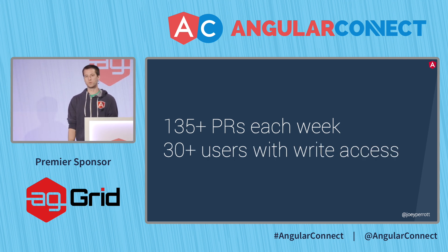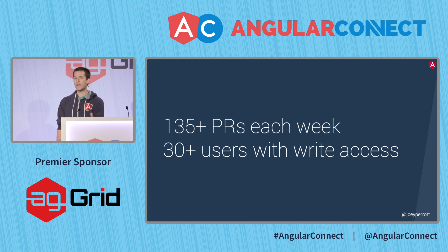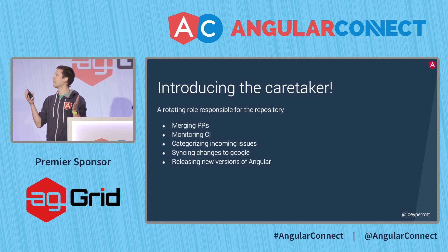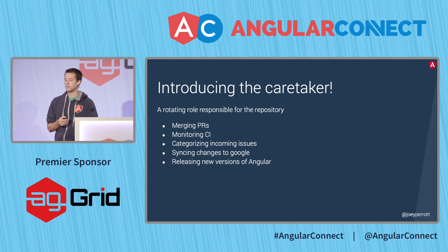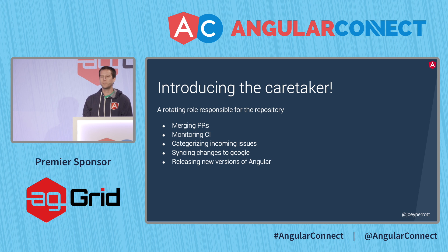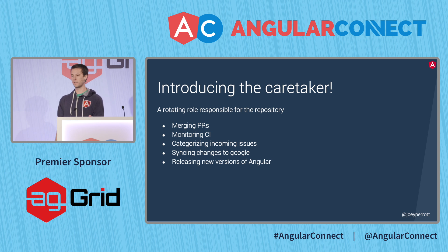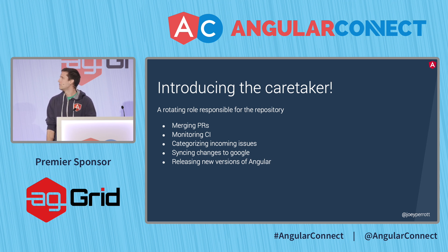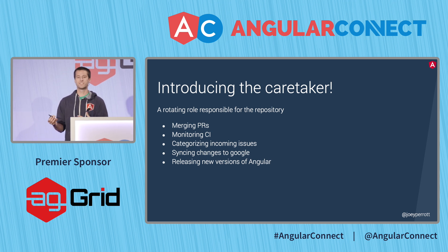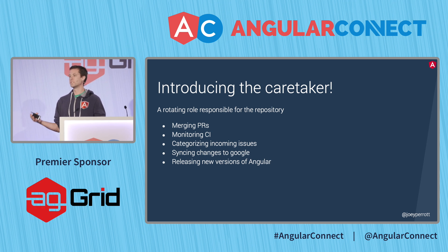We have more than 30 people who could theoretically go to GitHub and press the merge button, which would be absolute chaos if everybody just merged whenever they felt things were ready. So instead, we came up with a new role on our team: the caretaker. The caretaker is responsible for making sure our repo stays in order. Because of all the checks we walked through, if everything passes, anyone — regardless of their understanding of the specific code being merged — can be confident it's ready to merge. The caretaker also monitors CI, categorizes incoming issues for triage, syncs changes into Google, and releases new versions of Angular at the end of their rotation.